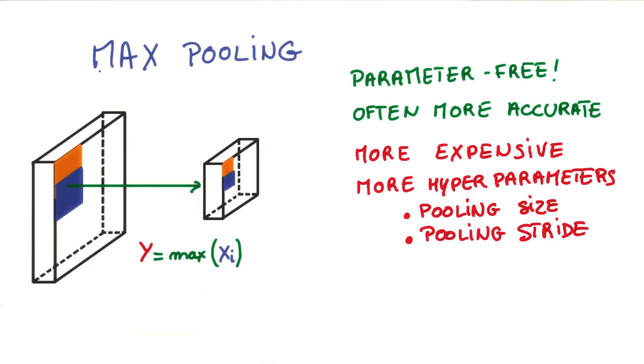The most common is max pooling. At every point on the feature map, look at a small neighborhood around that point, and compute the maximum of all the responses around it. There are some advantages to using max pooling.